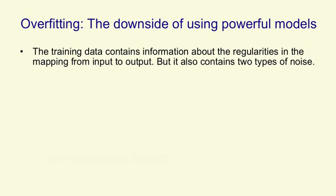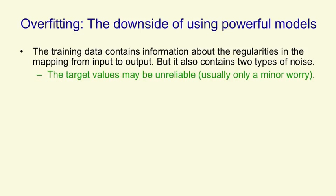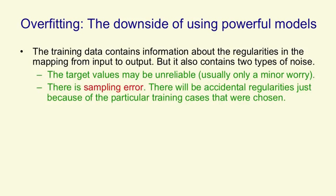The second set of issues is to do with how well the network generalizes to cases it didn't see during training. The problem here is that the training data contains information about the regularities in the mapping from input to output, but it also contains two types of noise. The first type is that the target values may be unreliable — for neural nets, that's usually only a minor worry. The second type is sampling error: if we take any particular training set, especially a small one, there'll be accidental regularities caused by the particular cases we chose. For example, if you show someone a square and a rectangle, there's no way for them to realize that polygons might have three sides or seven sides, or that the angles don't have to be right angles.